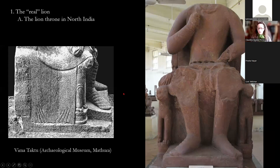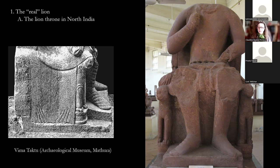The first element is the lion throne. The lion throne appears here on this image of the Kushan Emperor in the Mathura Museum — you have here two lions. And you have here a profile view of this throne with the lion emerging. The lions are depicted as real animals; they are there as symbols of power, to protect the ruler and also to threaten those who could attack the power.